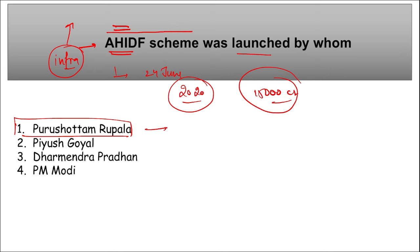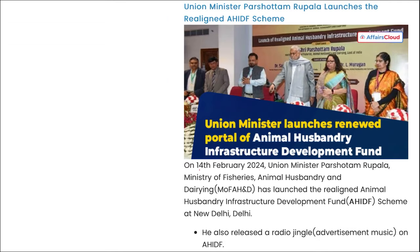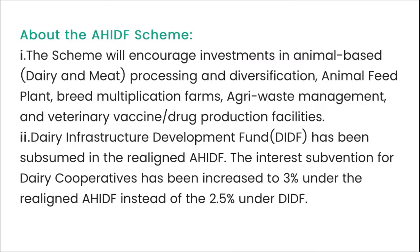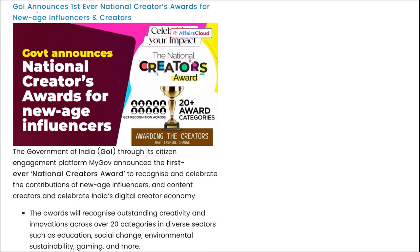Under AHIDF, multiple subsidies will be provided; loans of up to 90 percent of the project cost will be given by scheduled banks at low interest, and beneficiaries will get a credit guarantee of up to 25 percent of the term loan. On 14th February, Union Minister Purushottam Rupala launched the realigned AHIDF scheme at New Delhi and also released a radio jingle advertisement for AHIDF.